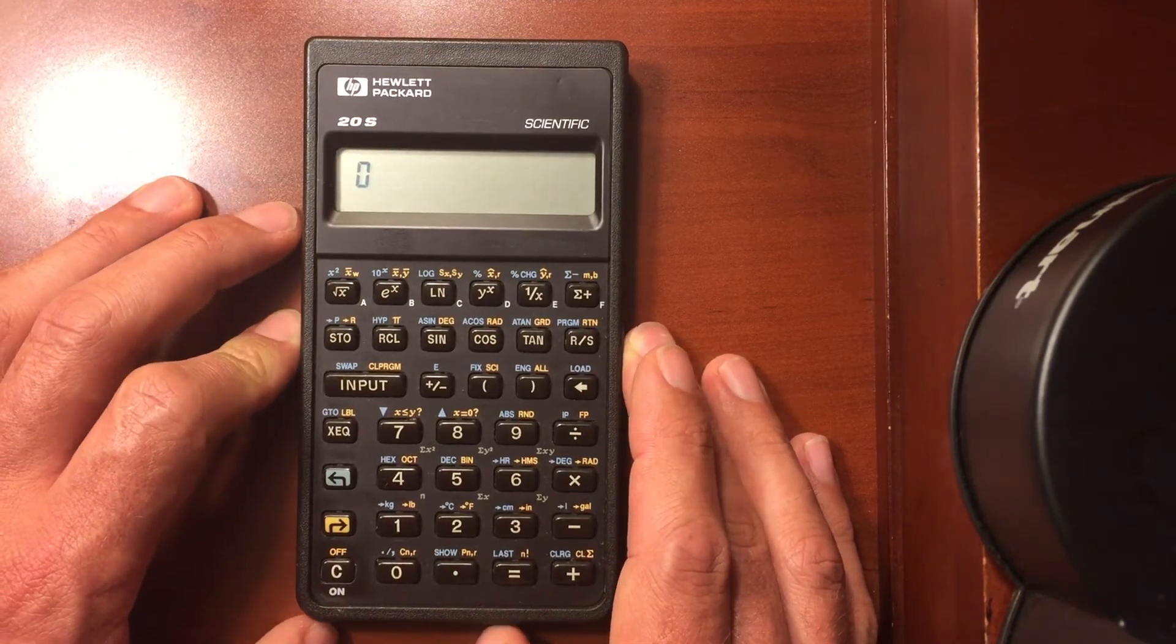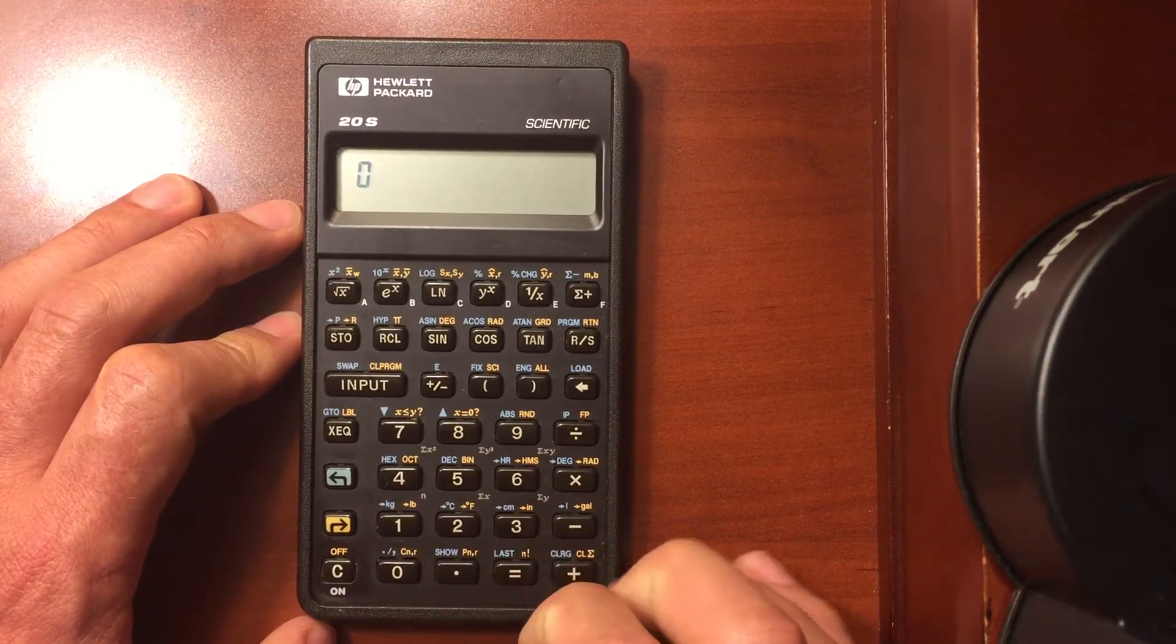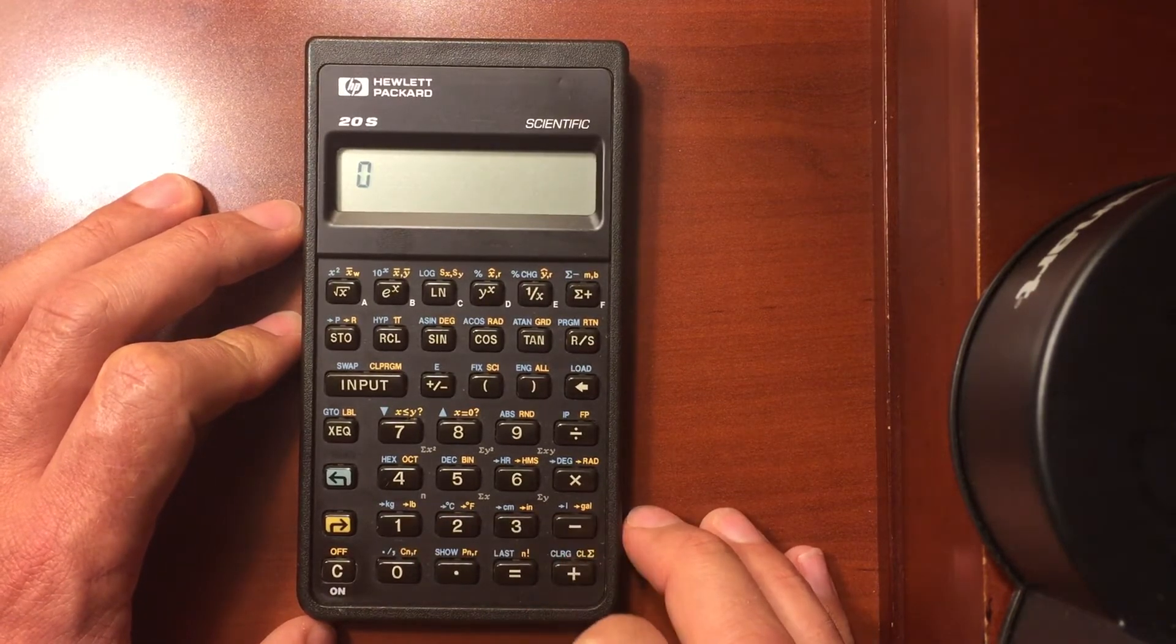You have kilograms and pounds. Convert back and forth. Centigrade, Fahrenheit. Centimeters, inches. Liters and gallons.